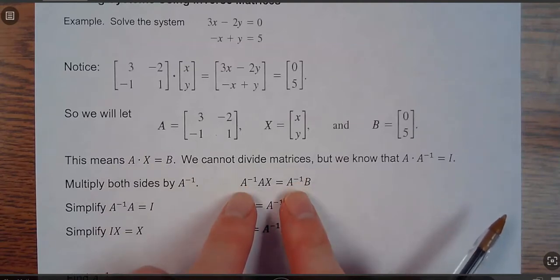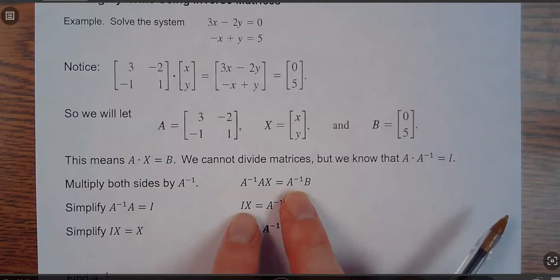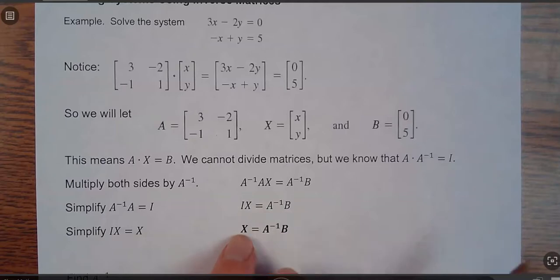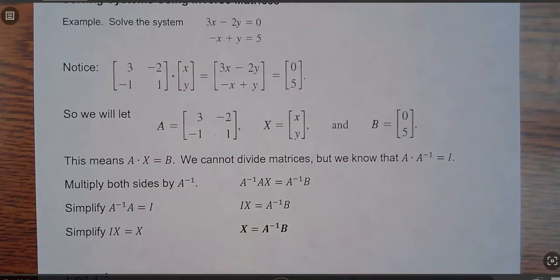On the left side, the inverse of A times A is just I. So it would be I times X. So identity times the variable matrix. On the right side, I can't do anything with. And anything times the identity matrix is itself.